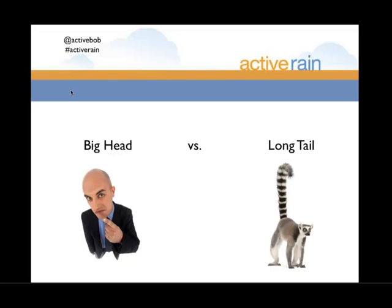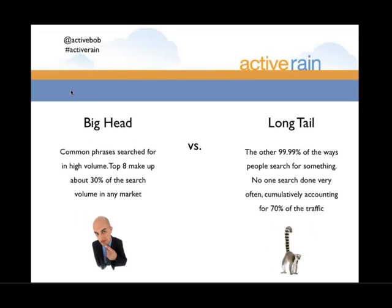We talked about the concept of the long tail in the first week of class. The 'big head' is those common phrases searched at high volume — the top eight phrases in any market make up about thirty percent of search volume. Think about that: only eight phrases make up thirty percent of all searches. Using Seattle as an example, those would be things like 'homes for sale in Seattle,' 'Seattle condos for sale,' 'Seattle real estate,' and 'Seattle houses for sale.'